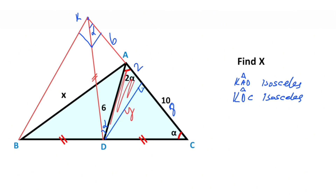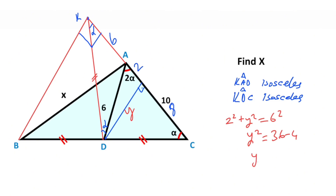For this triangle, if we apply the Pythagorean theorem we get: 2 squared plus y squared equals 6 squared. So y squared equals 36 minus 4, y squared equals 32, which means y is going to be 4√2.